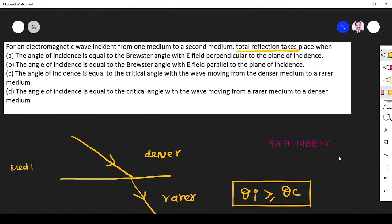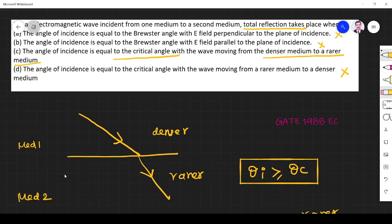So which one is satisfying this? The angle of incident is equal to critical angle and wave is moving from denser medium to rarer medium, angle of incidence equal to critical angle. These are the points which are right. Option C is the right answer. Thank you.